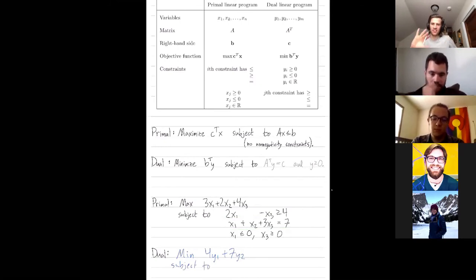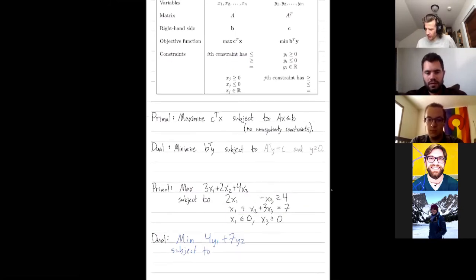All right. So we transpose this matrix. So when I transpose this matrix, it looks like 2, 1, 0, 1, negative 1, 3.